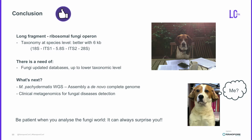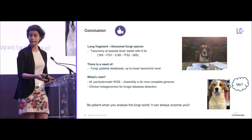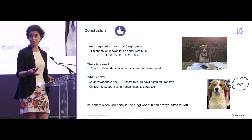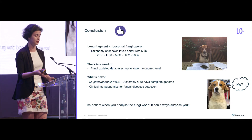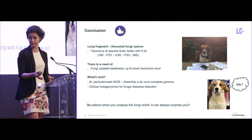In conclusion, we found that the 6 kb amplicons are better to detect fungal communities. We also need updated databases, and the next steps will be to complete the Malassezia pachydermatis whole genome analysis and then to go for clinical metagenomics to detect the fungal causal agents of disease.